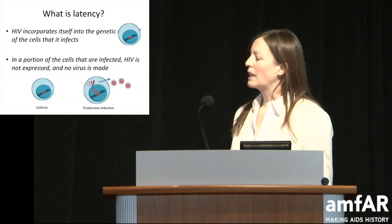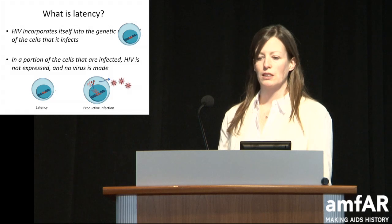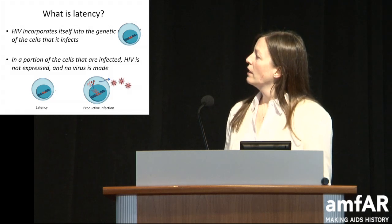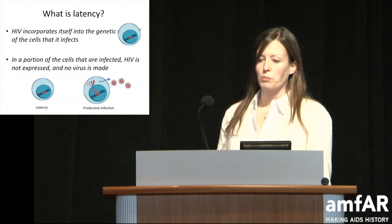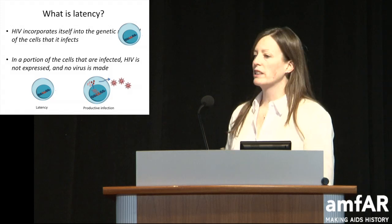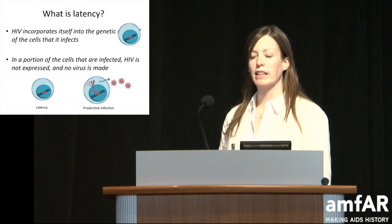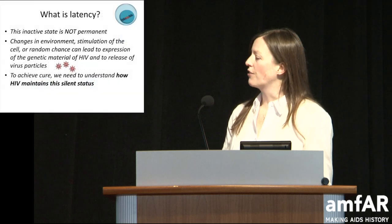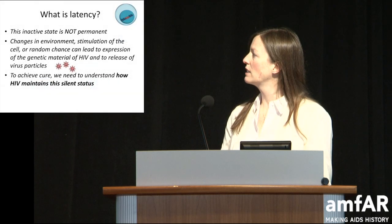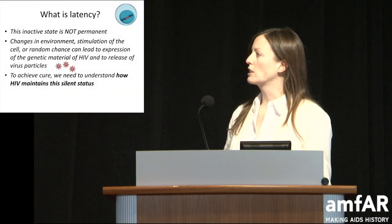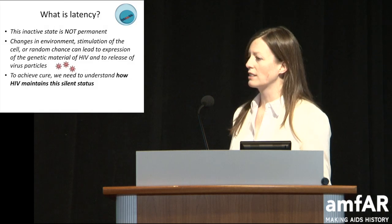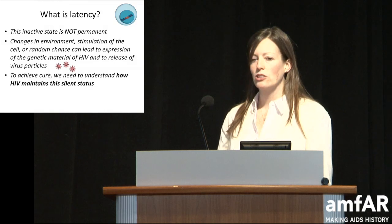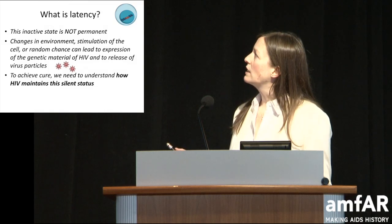The other problem is that if the cell is not making any HIV parts, there's no way the immune system can see it — how would it know that it's there? Then something wakes it up. If it stayed like that permanently, fine — and actually if we can find a way to make it stay like that permanently, that would work too. But it doesn't always. A change in the environment, a stimulation of the cell, or random chance can lead to expression of the HIV genetic material, and then you get viruses that go out and infect new cells. To achieve a cure, we need to understand how HIV stays quiet.